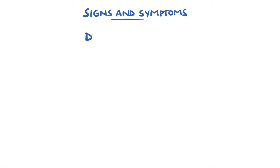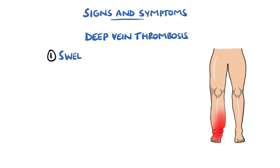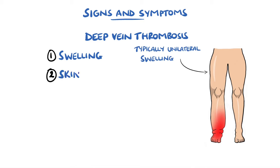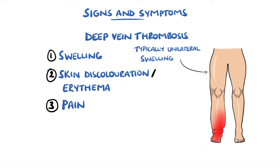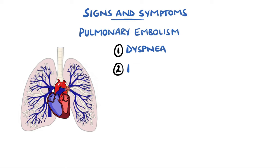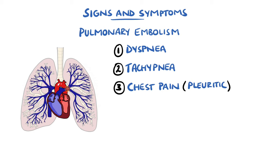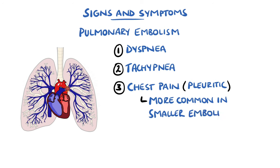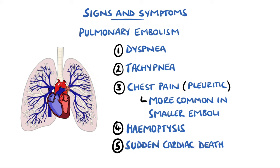Signs and symptoms of deep vein thrombosis include swelling of the affected limb typically unilaterally, redness or skin discolouration, tenderness or pain often described as cramping in the thigh or calf, and warmth of the limb. Pulmonary embolism typically presents acutely with dyspnea, tachypnea, and chest pain often described as pleuritic, meaning it worsens with breathing. This is more common in smaller emboli that reach the periphery, as they are more likely to cause infarction of that part of the lung. Haemoptysis, which is coughing up blood, is another finding, and pulmonary embolism can also be a cause of sudden cardiac death.